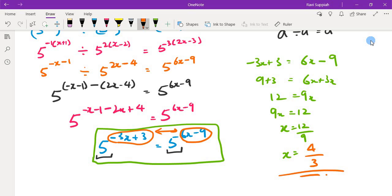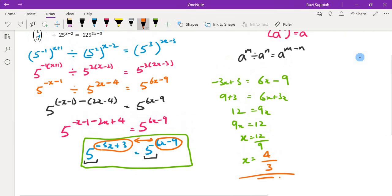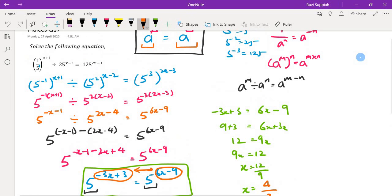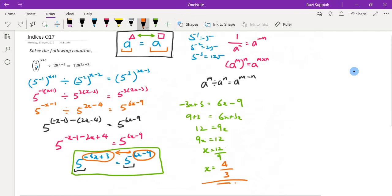So that is the final answer for this question. You can see that the approach is always very similar. What we want is to move towards the point where both the bases are the same and then we can compare the powers, and from there we can solve for x. So I hope this question has further reinforced your concepts in indices. Thank you, bye.